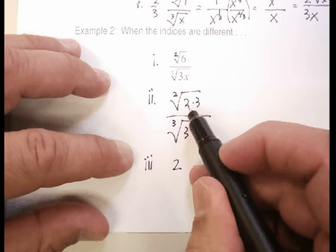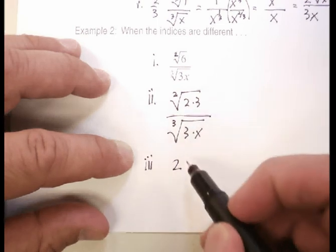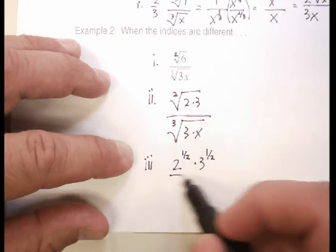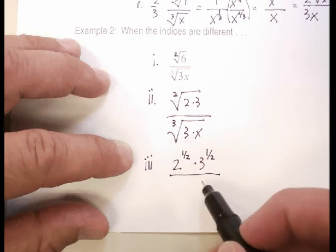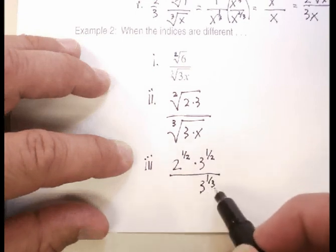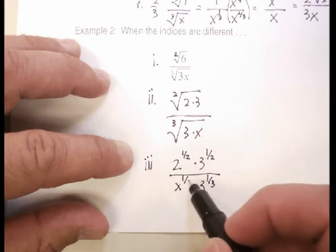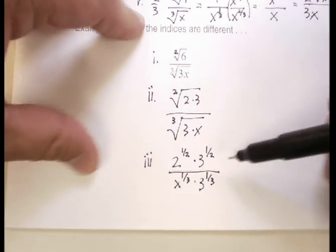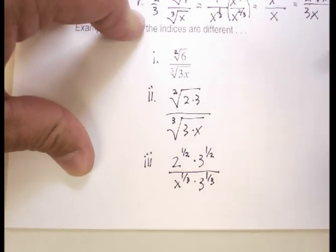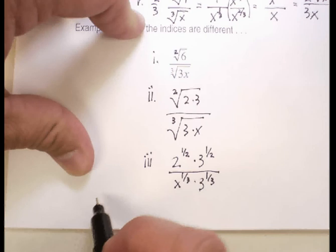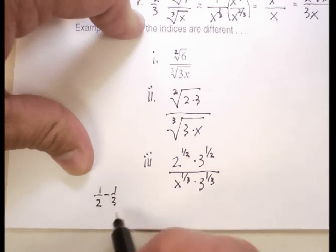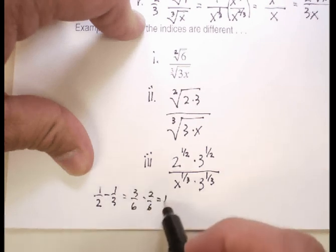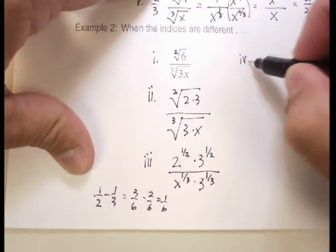Then I'm going to change them to fractional exponent form — the radicand raised to the exponent over the index. Up top: 2 to the one-half times 3 to the one-half. Below: 3 to the one-third times x to the one-third. Notice I lined up the threes — I can subtract those fractions: one-half minus one-third equals three-sixths minus two-sixths, which is one-sixth.